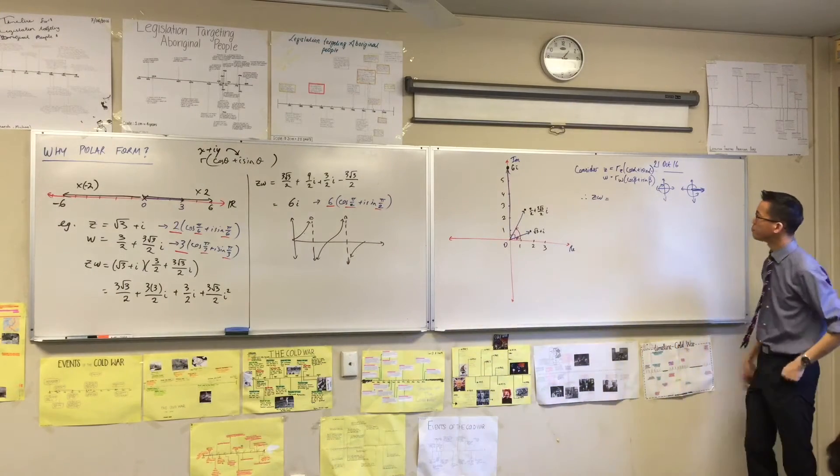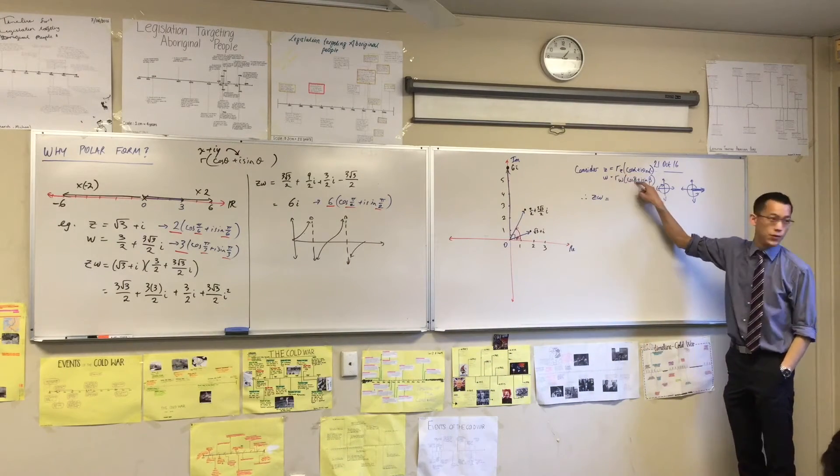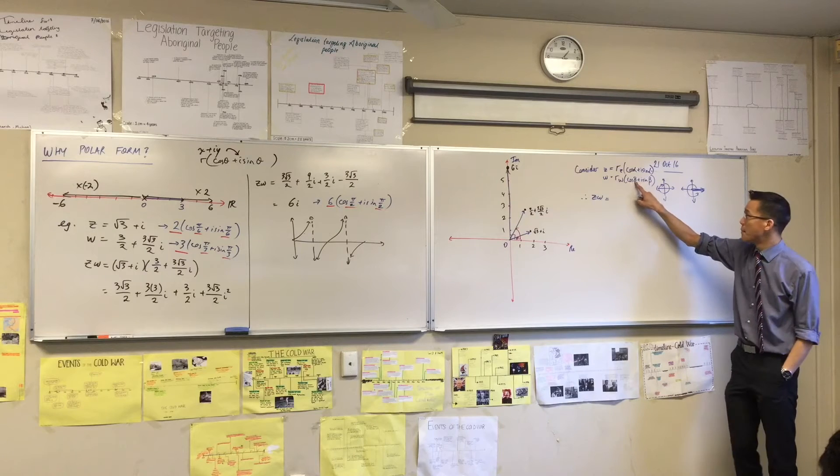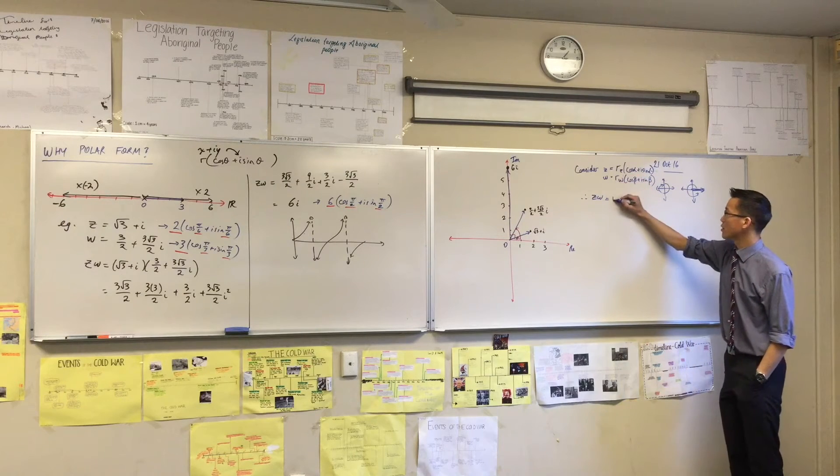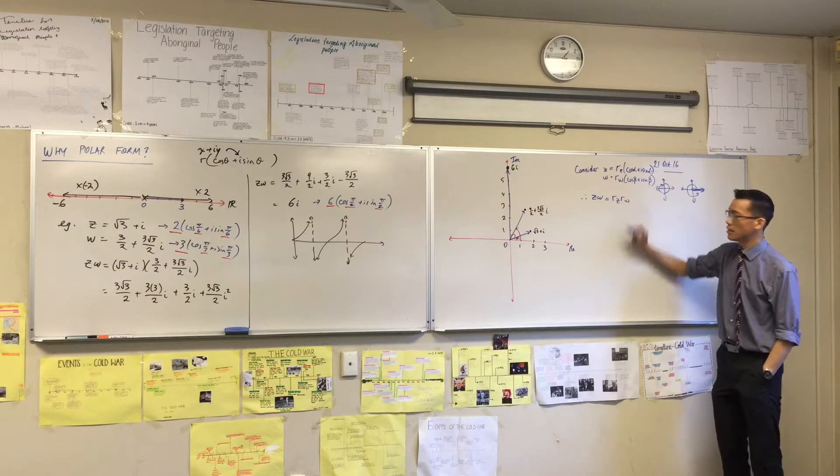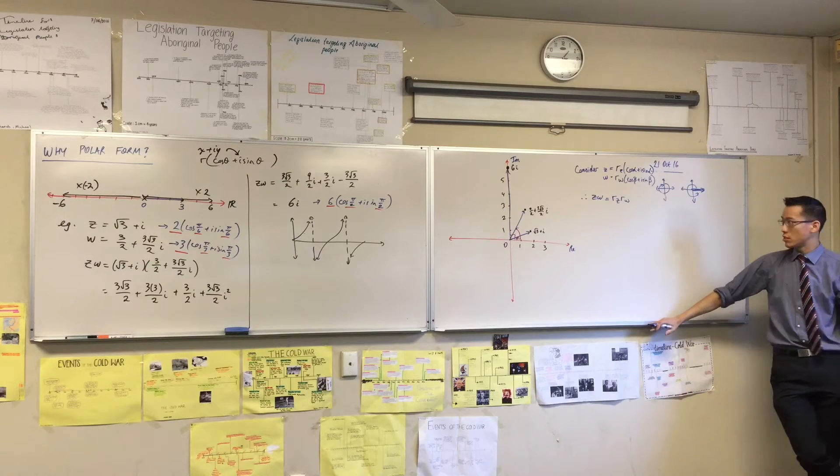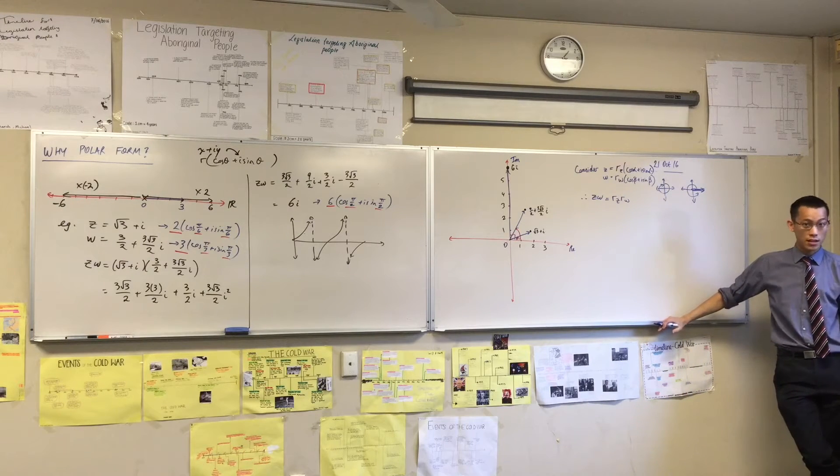As we multiply through, you've actually got one, two, three, four things that you're multiplying by, right? But I can gather some of these things together. For example, these guys out here, I'm just going to leave them out the front, because I can't do anything with them. There's no simplifying that can be done.